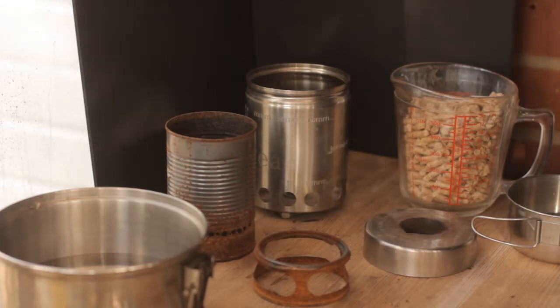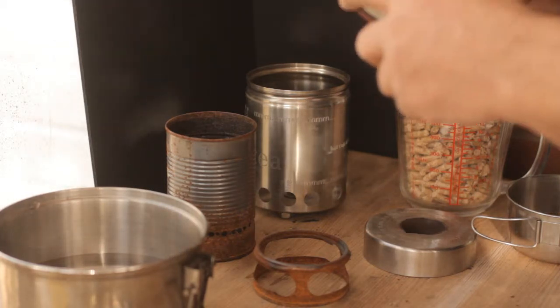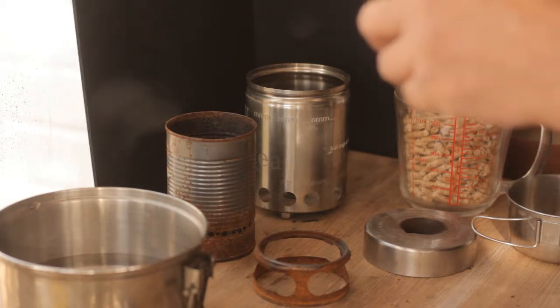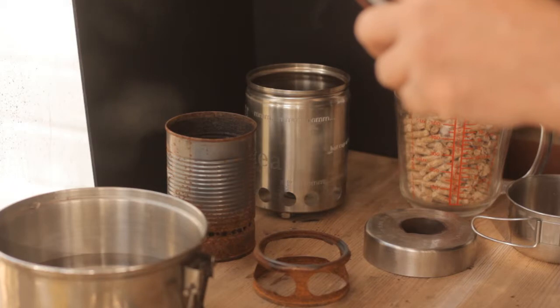We're going to fuel it up with kitty litter. Put some kitty litter that's been soaked in barbecue lighting fluid on the top. Give it a light, put our pot stand on the top, and then we'll put two cups of water in this stainless steel pan and put that on the top, get a timer going and see how we go.